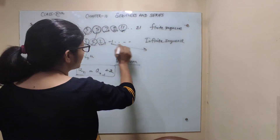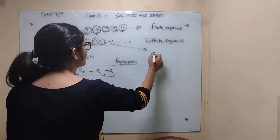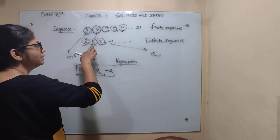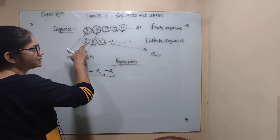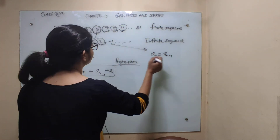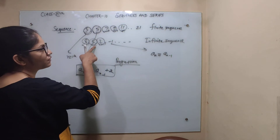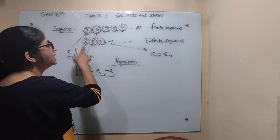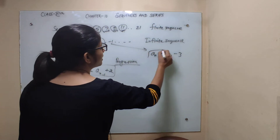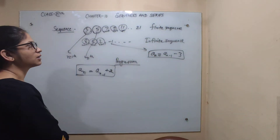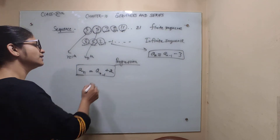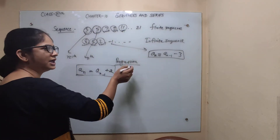For the second sequence, the formula is a_n equals a_{n-1} minus 3. For example, 8 minus 3 gives 5, and 5 minus 3 gives 2. This explicit formula allows us to find any term, so this sequence is also called a progression.